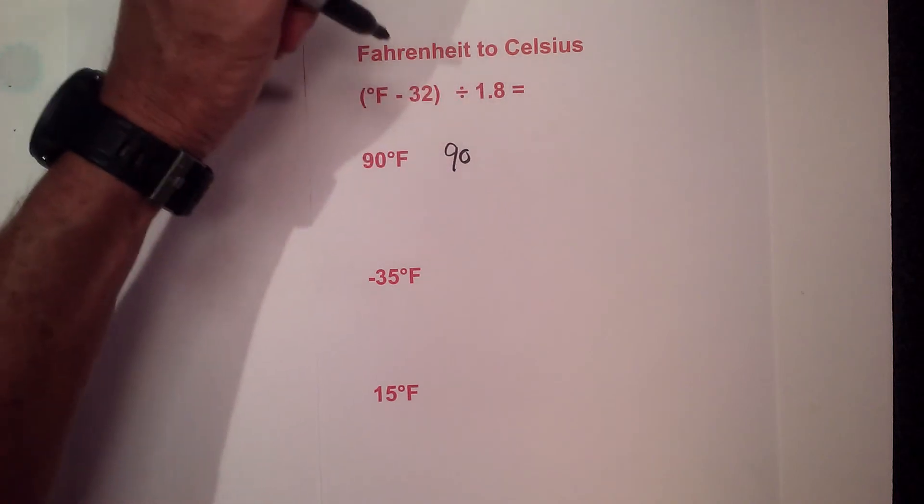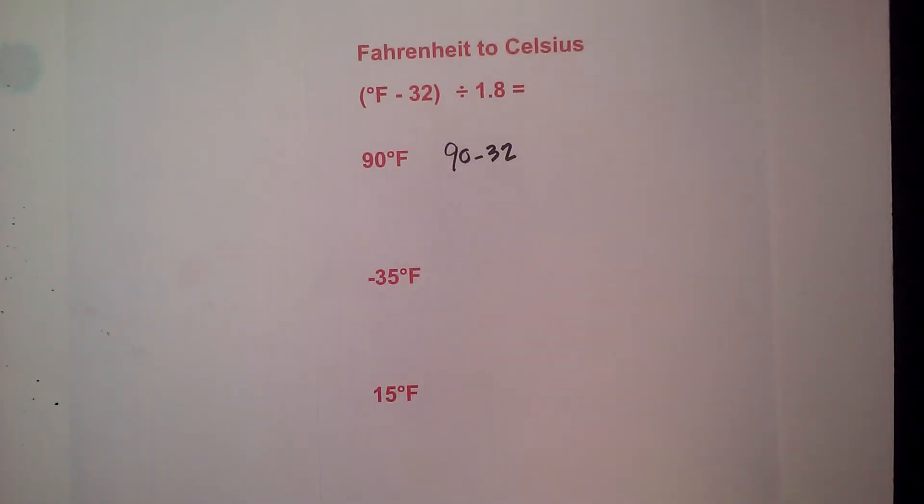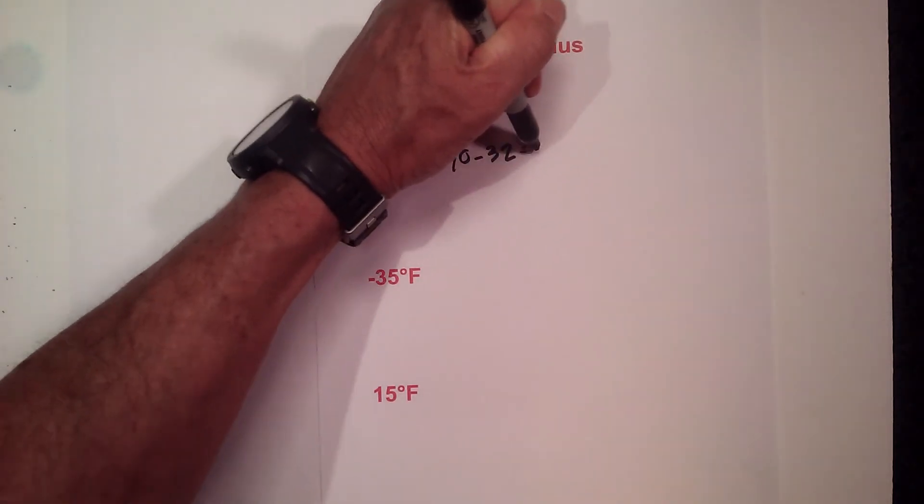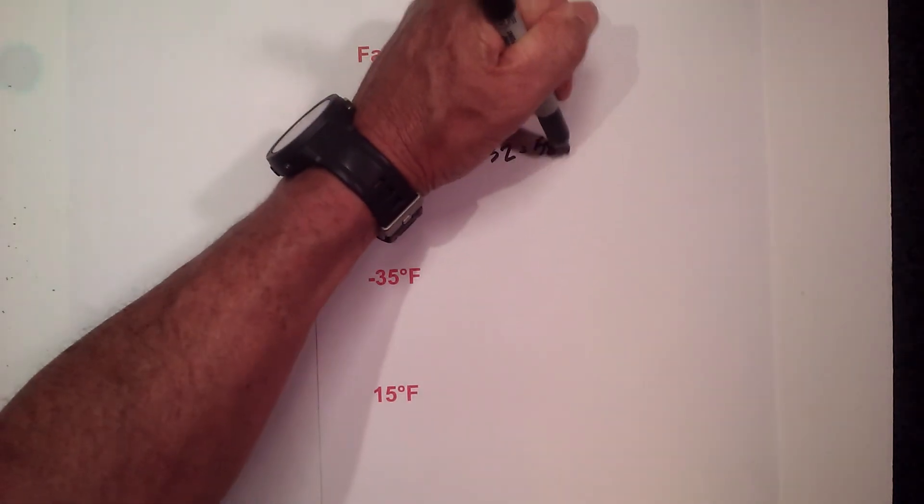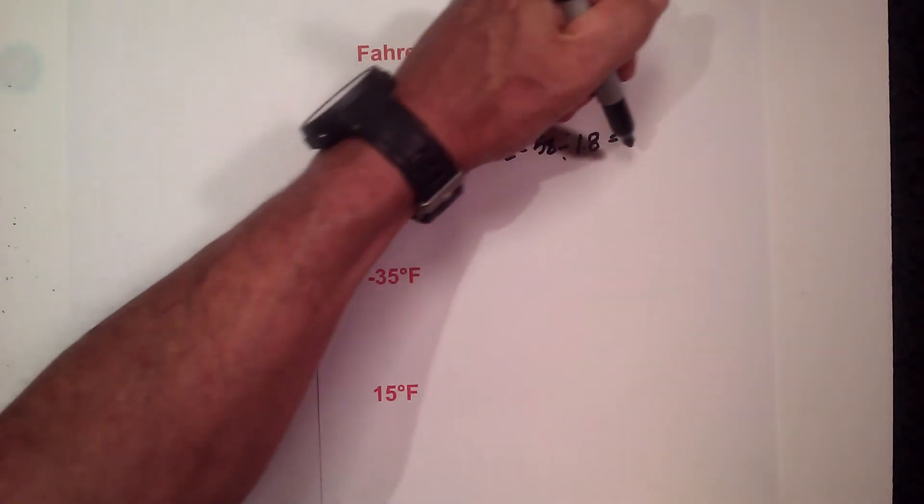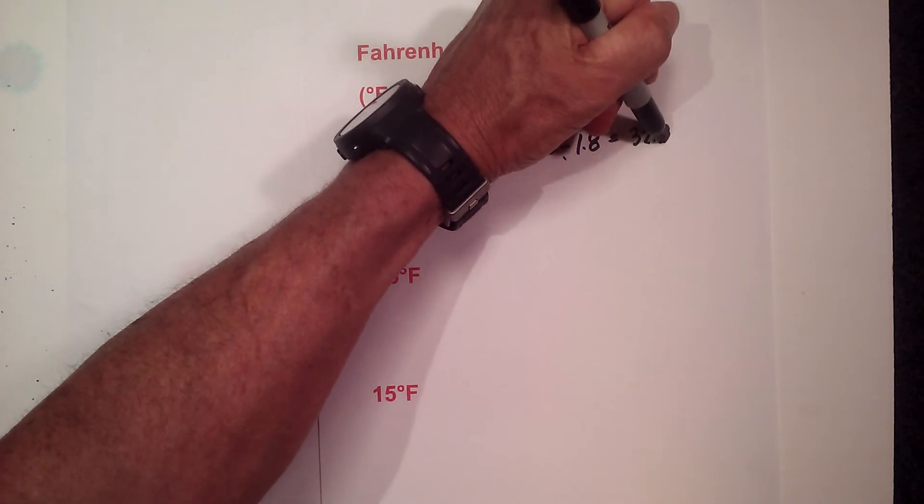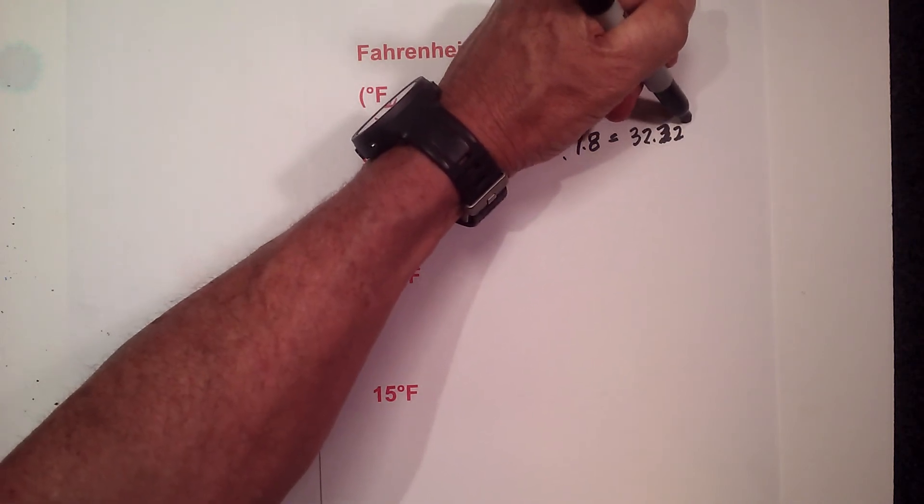We have 90 degrees minus 32. 90 minus 32 equals 58 and then when you divide 58 by 1.8 that equals 32.22 degrees Celsius.